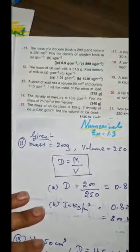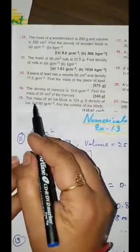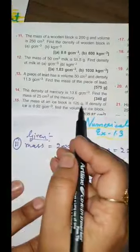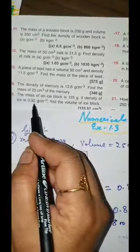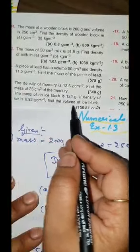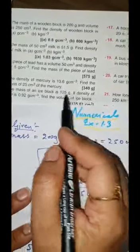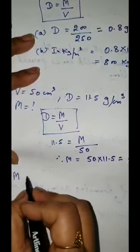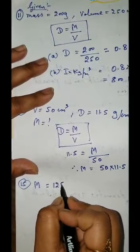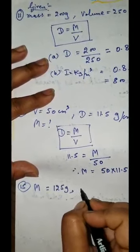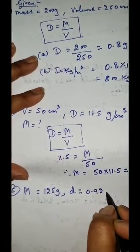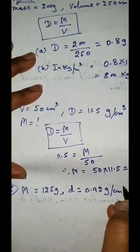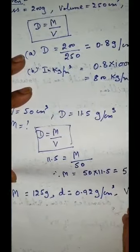Now coming to the 15th numerical of your book. The mass of an ice block is 125 gram. If density of ice is 0.92 gram per centimeter cube, find the volume of ice block. What is given? Mass is given 125 gram.